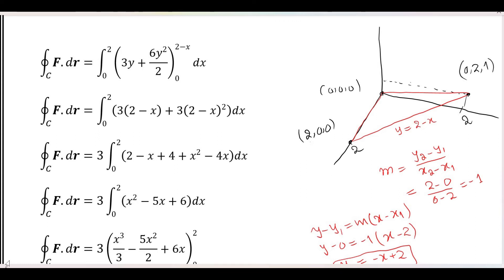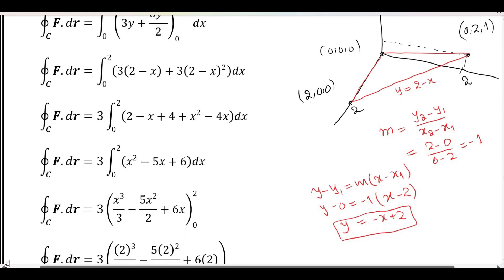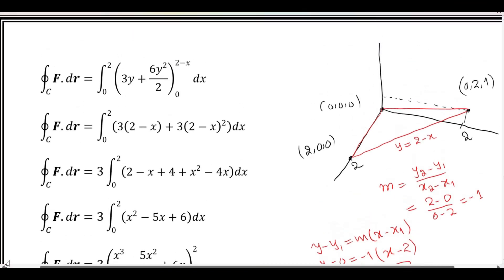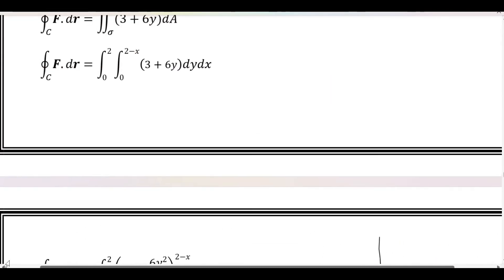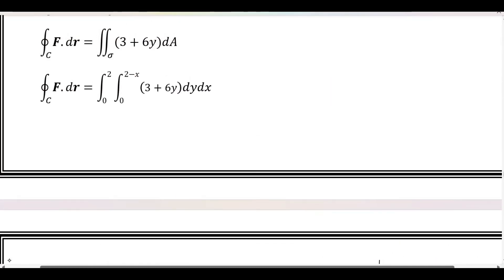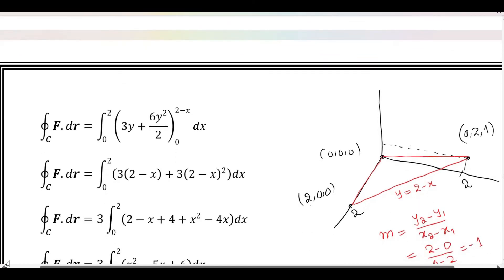We find the straight line equation: y minus y₁ = m(x minus x₁). Then we find m, then the full equation. We find the y limits: upper limit and lower limit. The x limit is 0 to 2, and the y limit is 0 to 2 minus x. Now we have a simple double integration to evaluate.